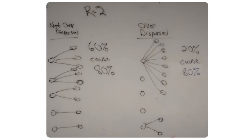If there is over-dispersion in the transmission of the Wuhan virus, it's possible that vigilance can identify the super-spreaders and isolate them. Then even if other infected individuals who are not super-spreaders enter a country, they may not cause an epidemic. Conversely, super-spreaders who evade detection can cause explosive epidemics.